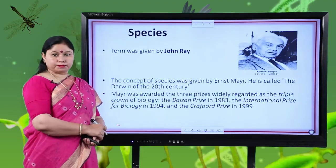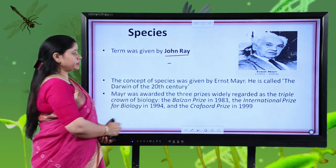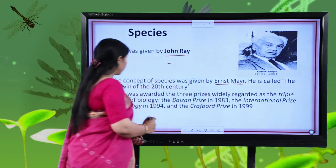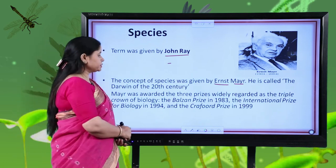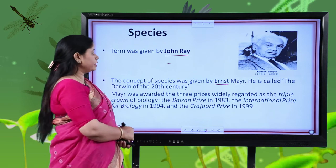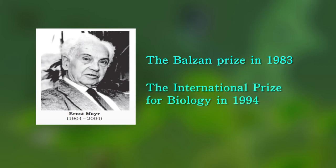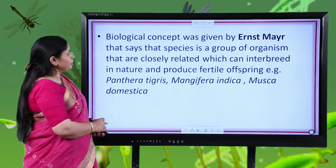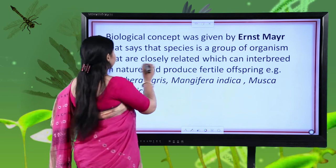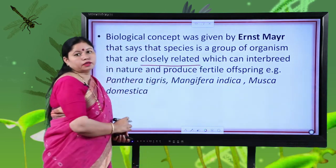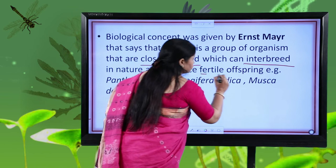Let us understand the concept of species first. The term was given by John Ray and the concept was formulated by Ernst Mayer, also called the Darwin of the 20th century. Mayer was awarded three prizes widely regarded as the triple crown of biology: the Belgian prize in 1983, and the international prize for biology in 1994. His biological species concept says that species is a group of organisms that are closely related, can interbreed among themselves, and produce fertile offspring.